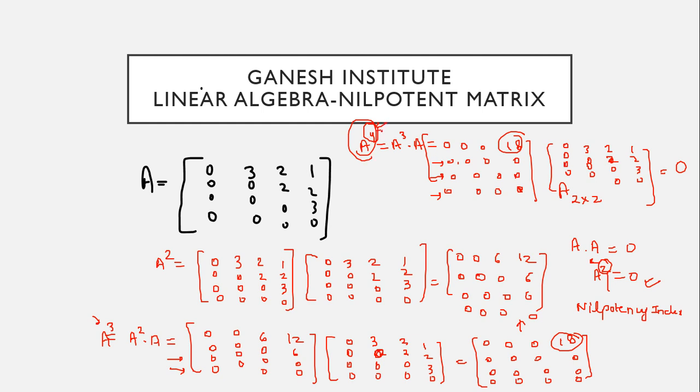So yes, this is giving you null matrix. So A to the power 4 is the nilpotent matrix and 4 is the nilpotency index, which is the number of times a matrix is getting multiplied by itself so as to get zero. I'm hoping you got this idea of nilpotent matrix.